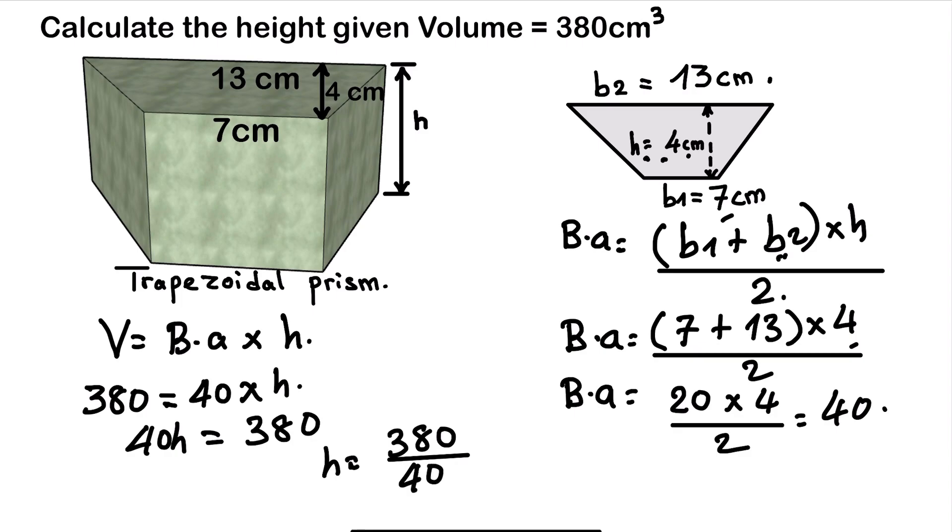So we can simplify if we don't have a calculator. 0 and 0 will cancel out. If we divide 38 divided by 2, we give us 19. And 4 divided by 2, we give us 2. So 19 divided by 2, we give us 9.5. So this is our answer 9.5 cm.